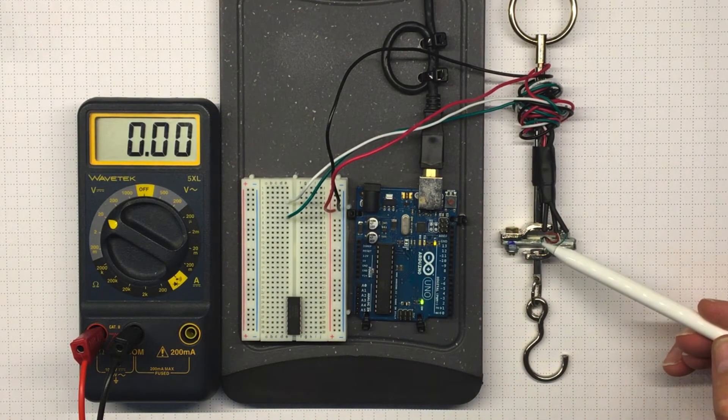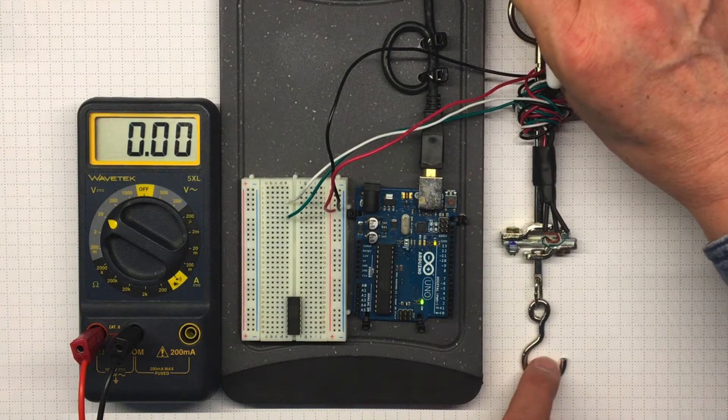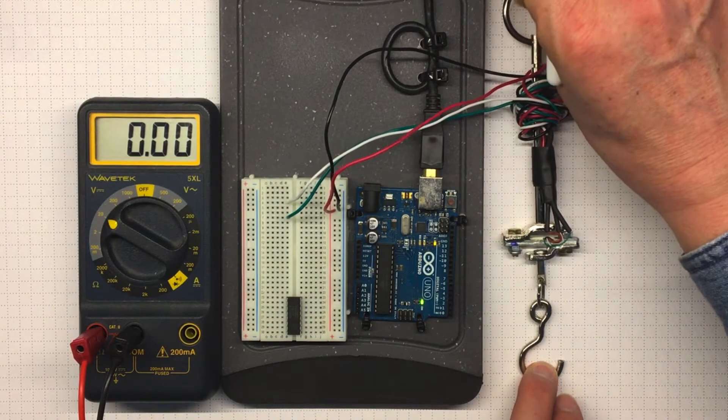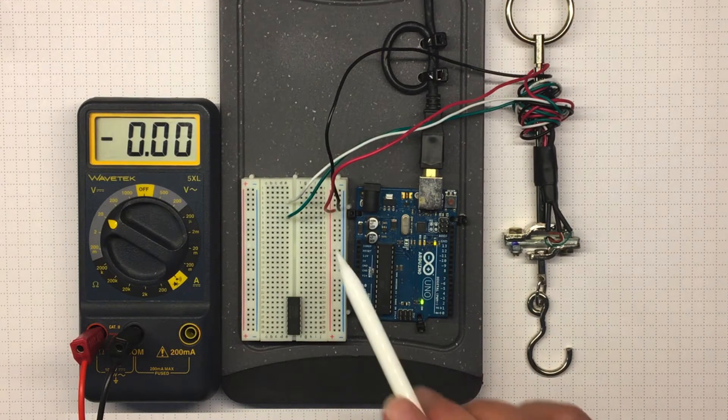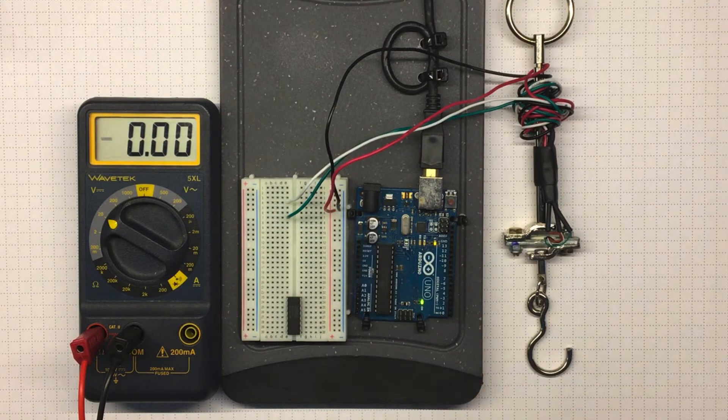Now to make this work so that it can sense the pull when I pull between those two ends of the luggage scale, I need to provide some power. And that's what the red and black is for.